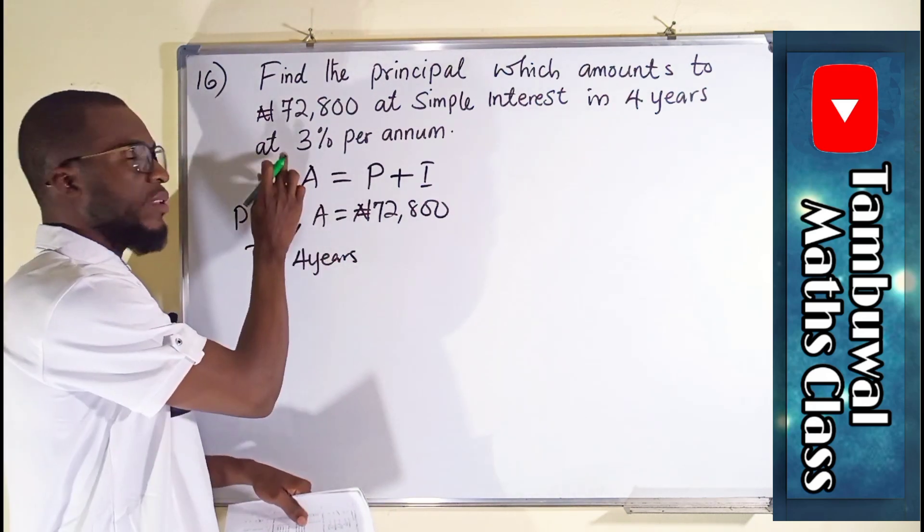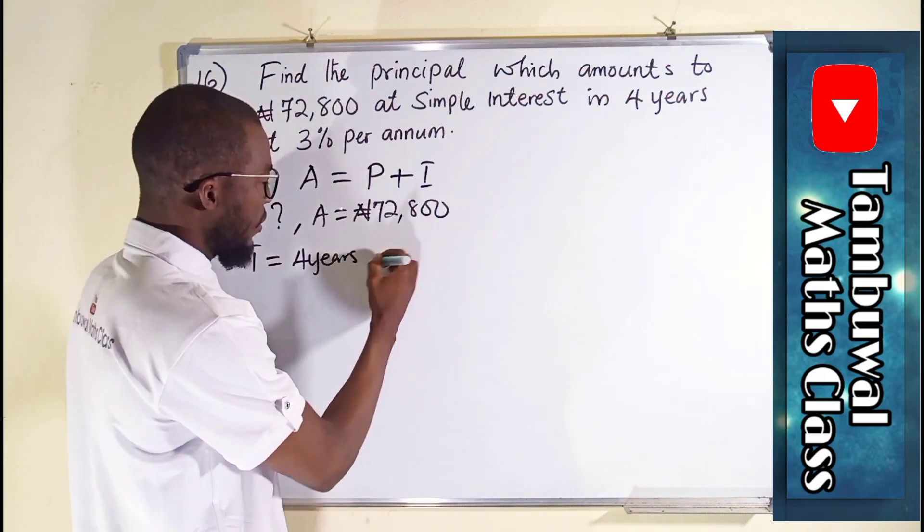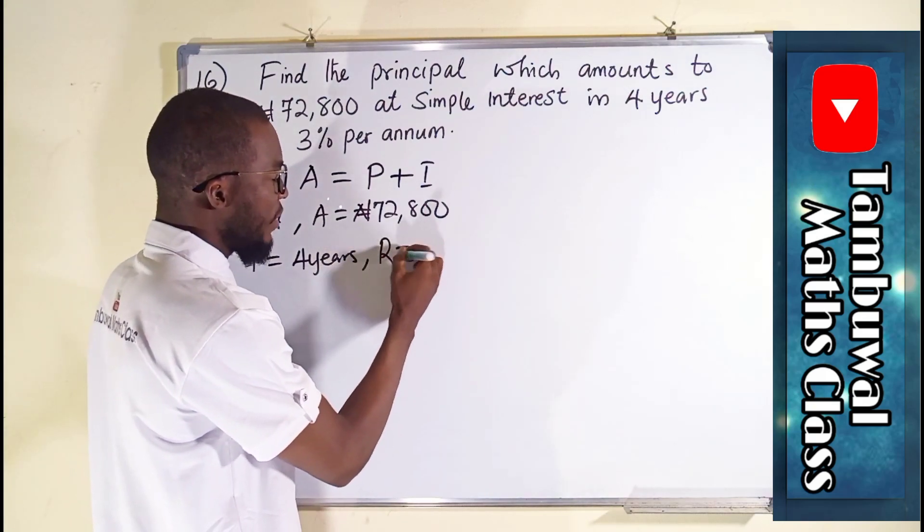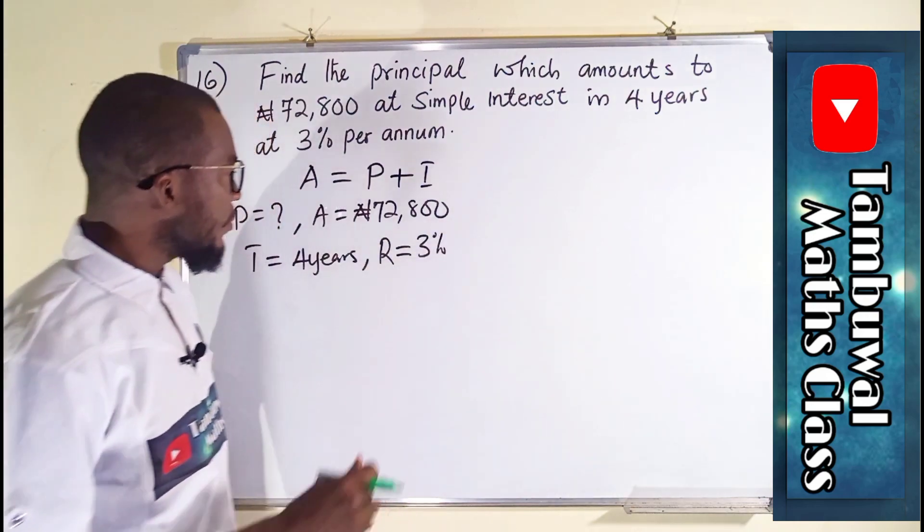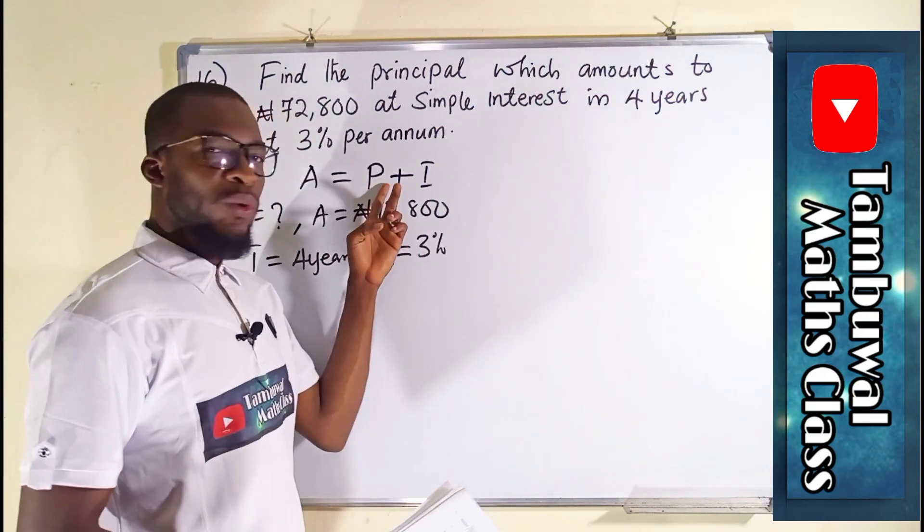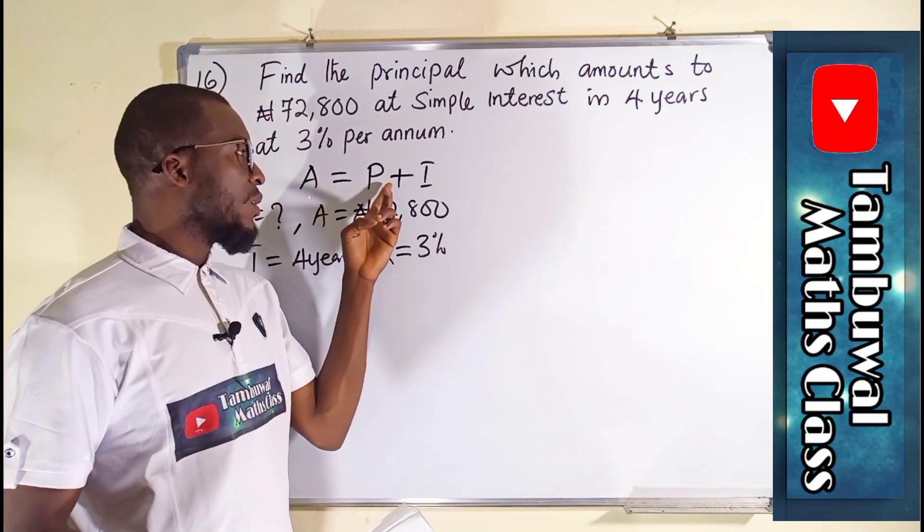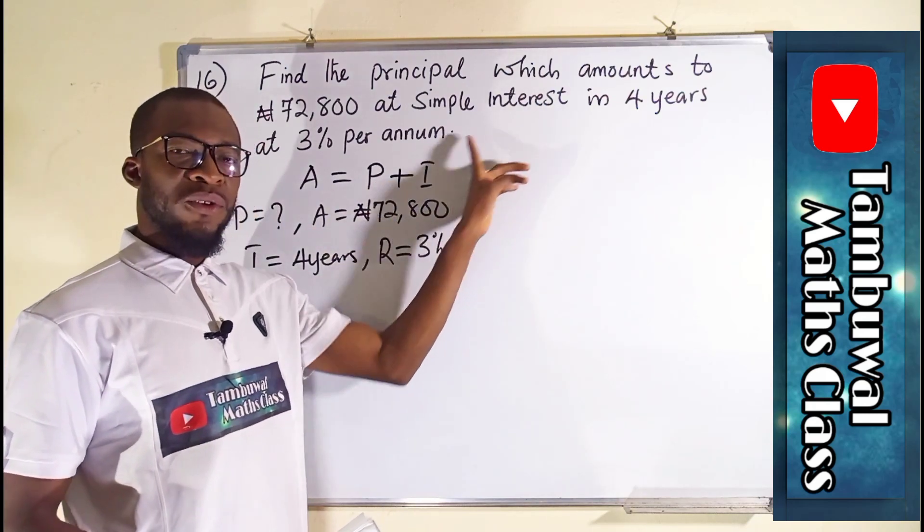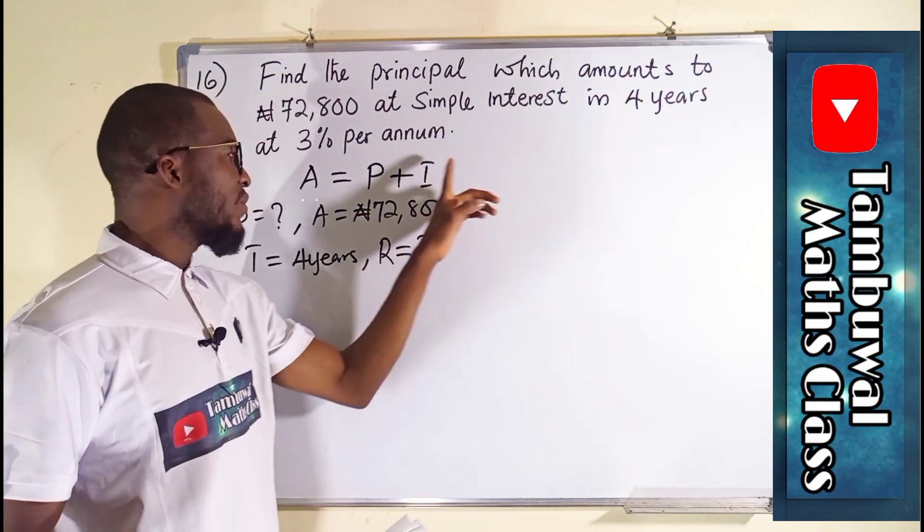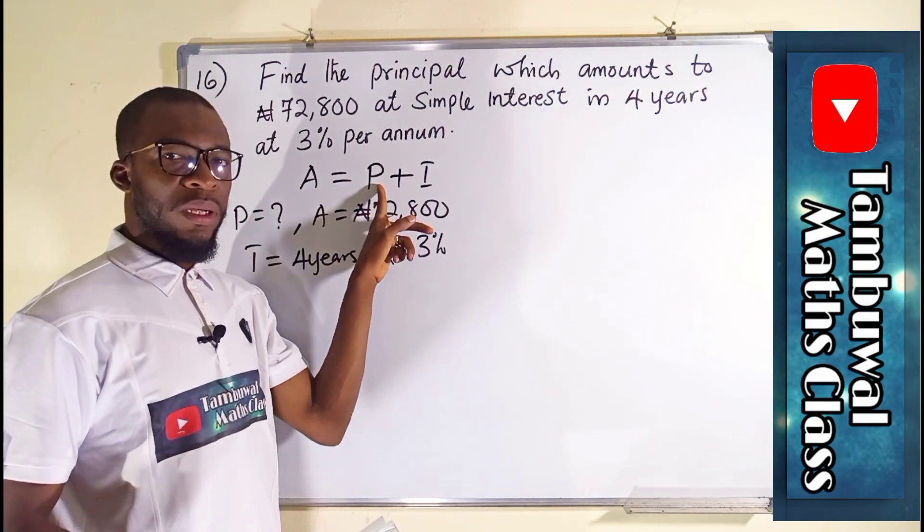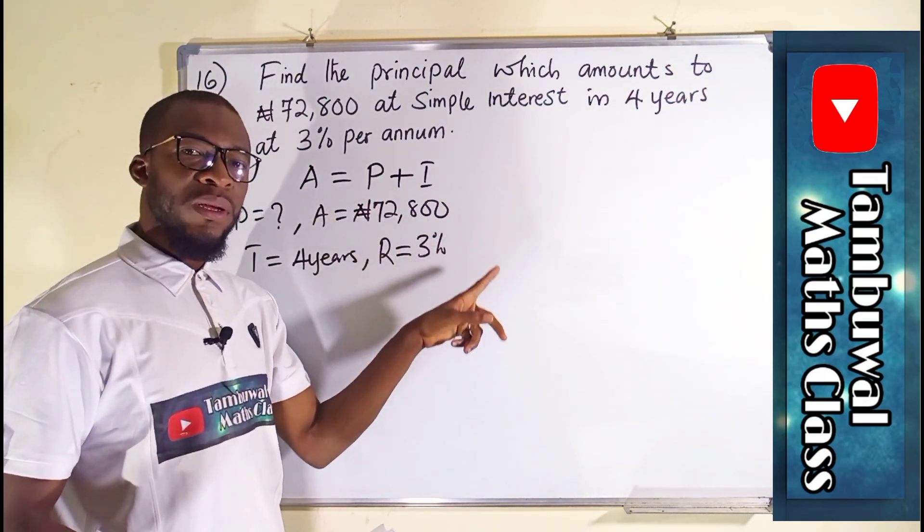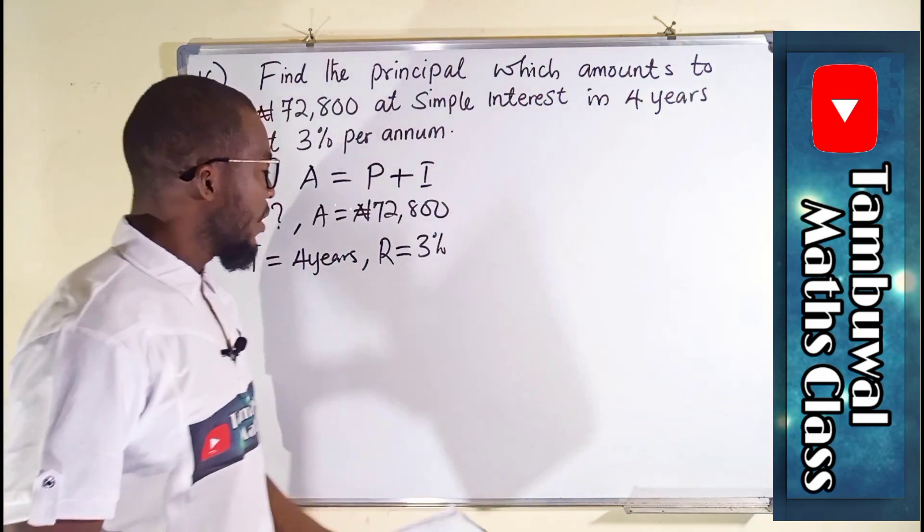And lastly, the rate is also given. So we say R is equal to 3%. Principal is what we are looking for. So, suppose the interest is given from the question, we can directly subtract it out of the total amount to obtain the principal. And since it is not given, we have to find it.